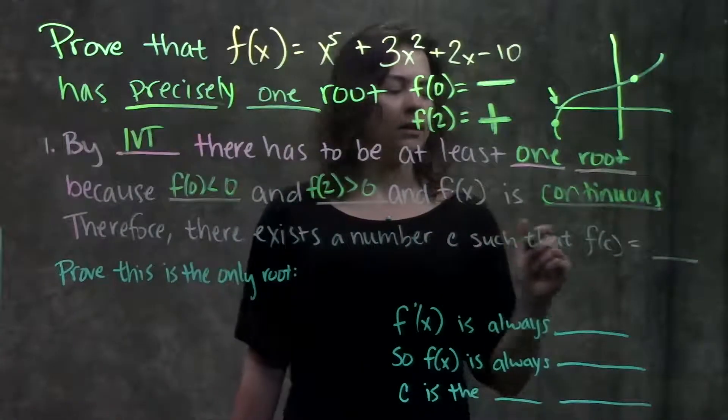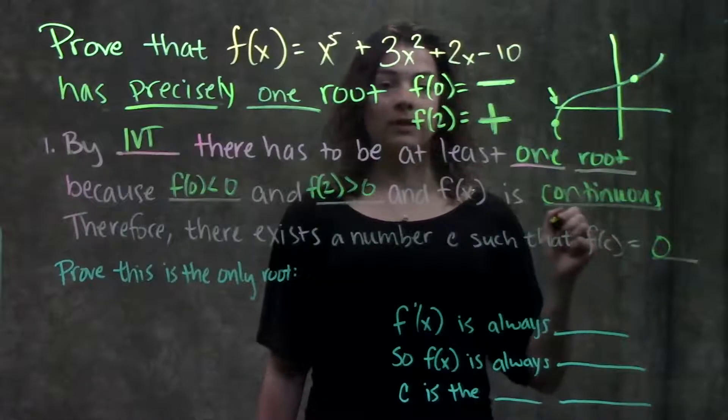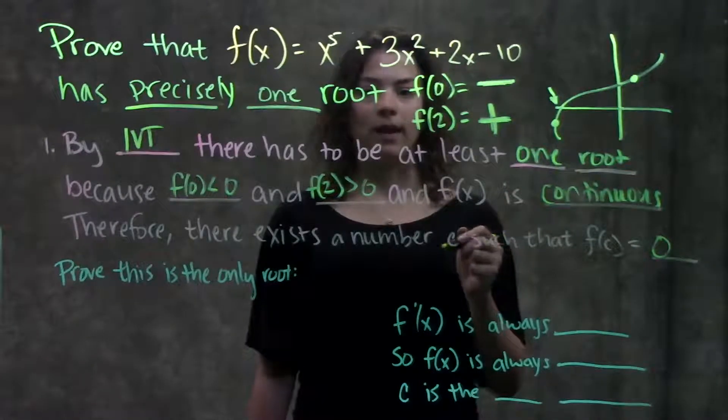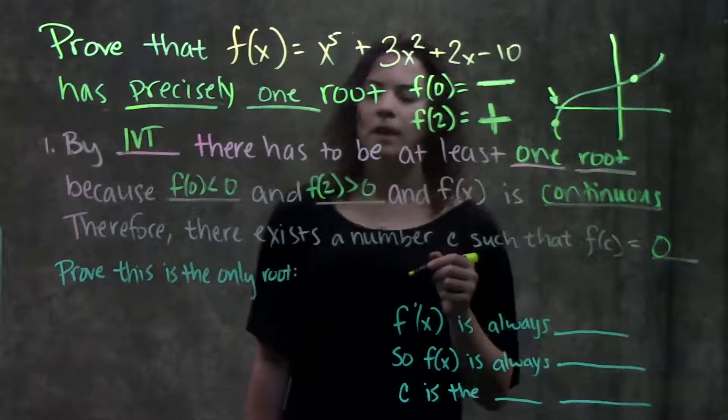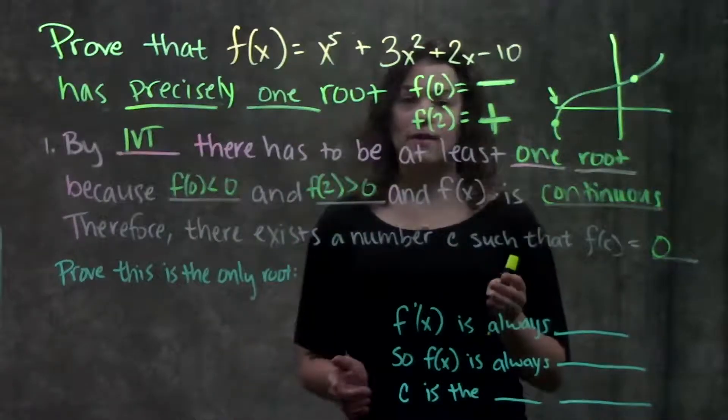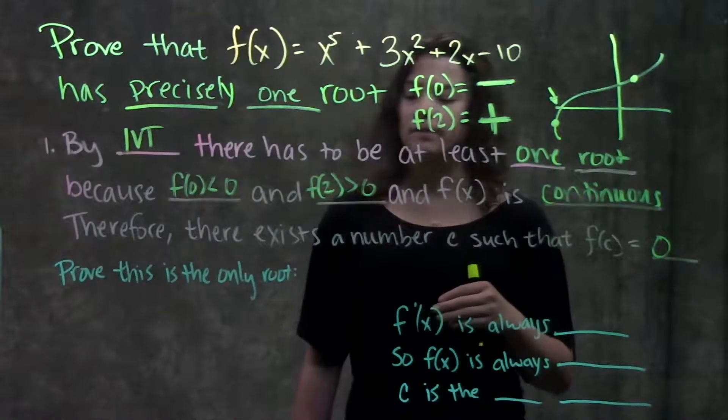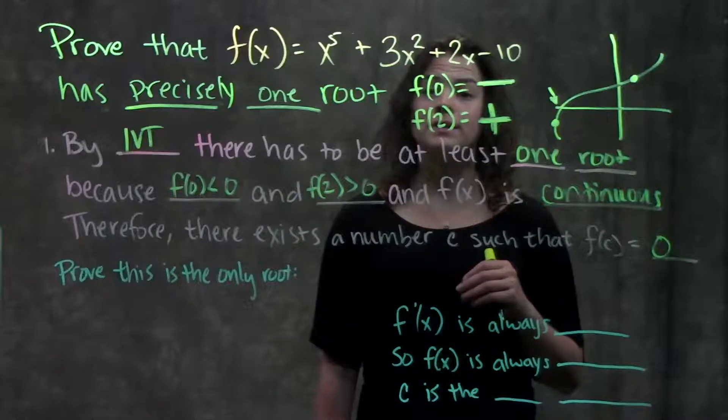Therefore, there exists a number c such that f(c) is equal to 0, at least one value that is equal to 0. So step one we verify that there is a root of this function. Step two we need to prove that this is the only root.